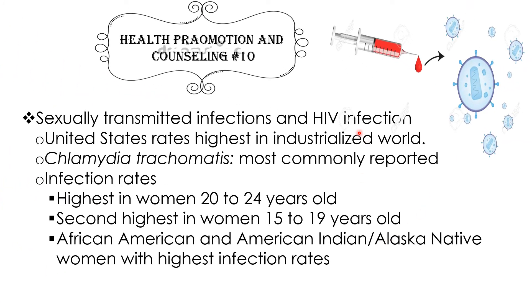Regarding sexually transmitted infections and HIV: in the United States, the STI rate is among the highest in the industrialized world. Chlamydia trachomatis is the most commonly reported STI. The infection rate is highest in women 20 to 24 years old, second highest in women between 15 to 19 years old, and the rates are highest among African-American and American Indian or Alaskan Native women.